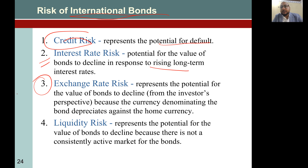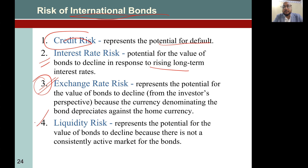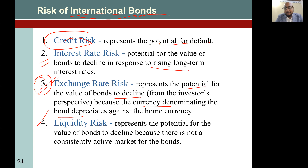What is unique about international bonds is exchange rate risk, which does not exist in domestic bonds. Interest payments are received in the currency in which the bond was issued, but when you convert that foreign currency into your local currency, you experience one more risk called exchange rate risk. This is unique to international bonds — in addition to all the risks inherent with local bond issuance, one extra risk you need to bear is exchange rate risk. It represents the potential for the value of bonds to decline because the currency denominating the bonds depreciates against the home currency.